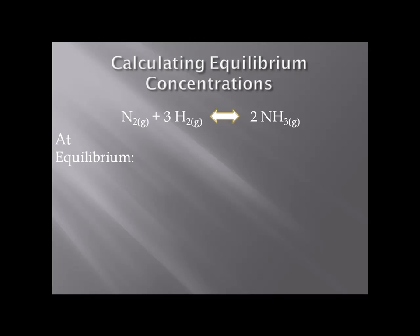At equilibrium, let's assume that we have a partial pressure of nitrogen of 0.432, our partial pressure of hydrogen is 0.928. What then would be our partial pressure of ammonia if our equilibrium constant is equal to 1.45 times 10 to the minus 5?